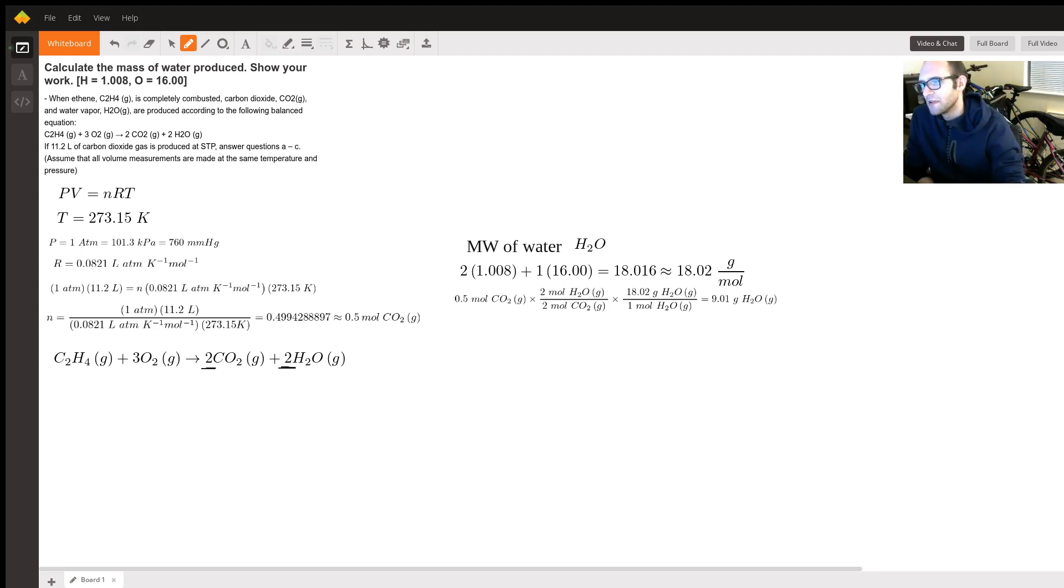STP, standard temperature is defined to be 273.15 Kelvin. Standard pressure is one ATM or 101.3 kilopascals or 760 millimeters of mercury.